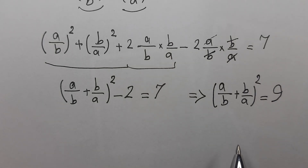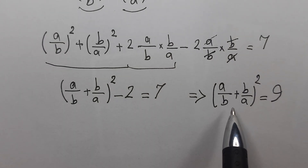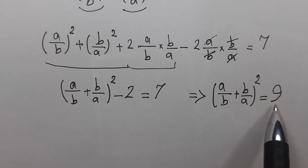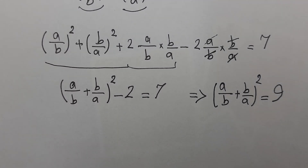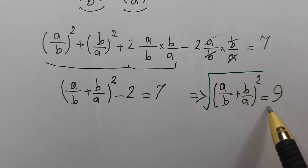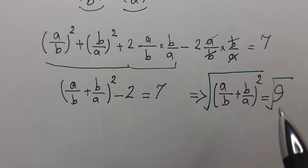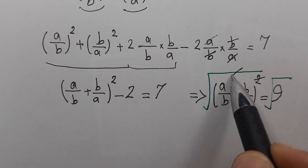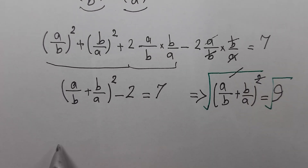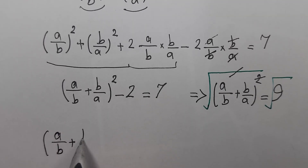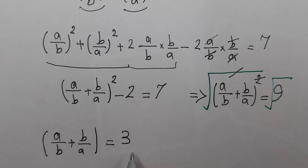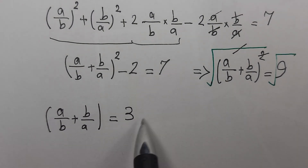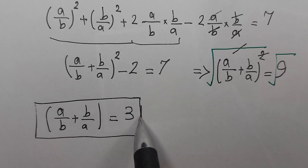Now we take the square root on both sides. The square root cancels the power of 2, leaving a/b + b/a on the left side, and the square root of 9 is 3. So our result is 3.